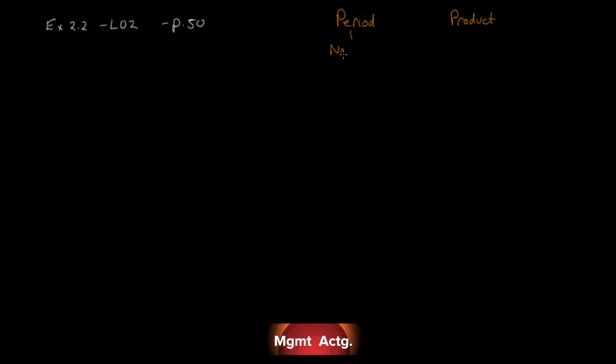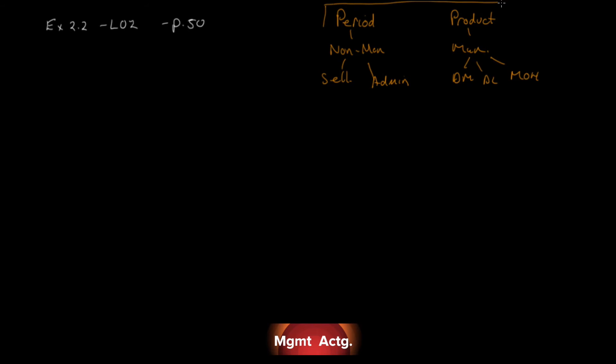Let's move on to Exercise 2.2, covering Learning Objective 2 — on page 50 in the 10th edition. The question asks us to classify costs as period or product costs. Let's recall: period costs are non-manufacturing costs, and product costs are manufacturing costs. Non-manufacturing includes selling expense and admin. Manufacturing includes direct material, direct labor, and manufacturing overhead. All we need to do is classify costs as either period or product.